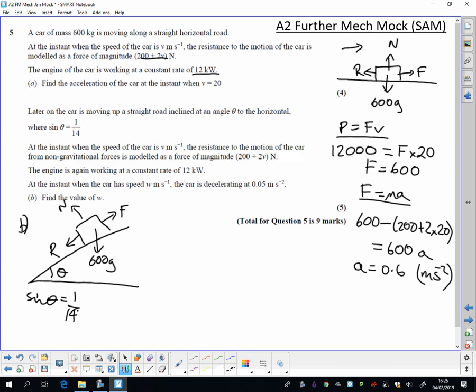OK, the speed is now V and the distance is exactly the same. The working rate is the same. So when it has speed W, it is decelerating at 0.05 meters per second. So the same thing again, we've got the same rate of work.